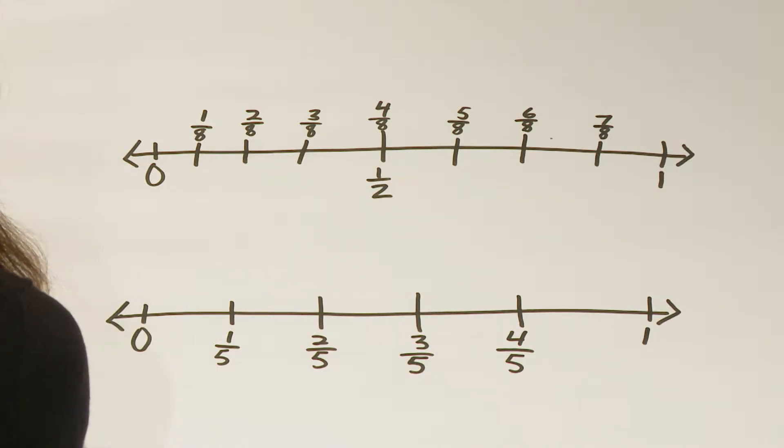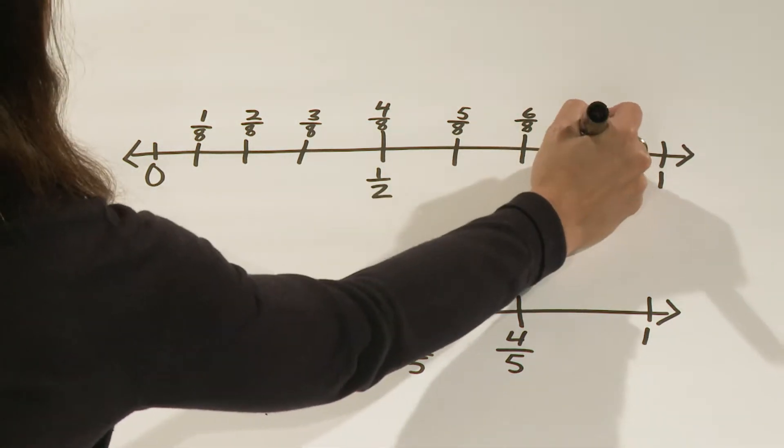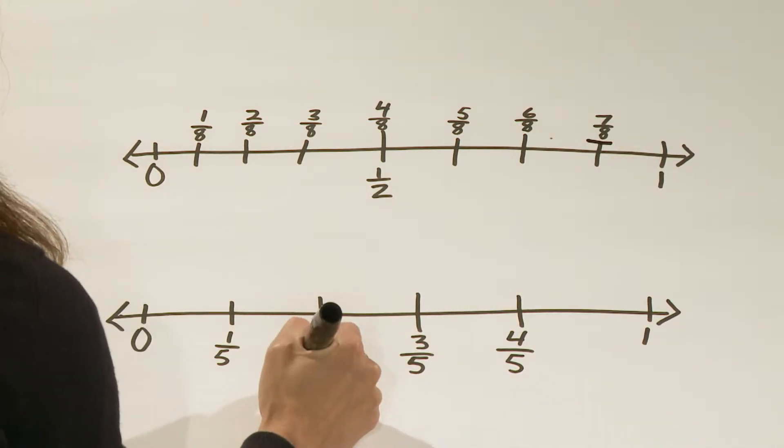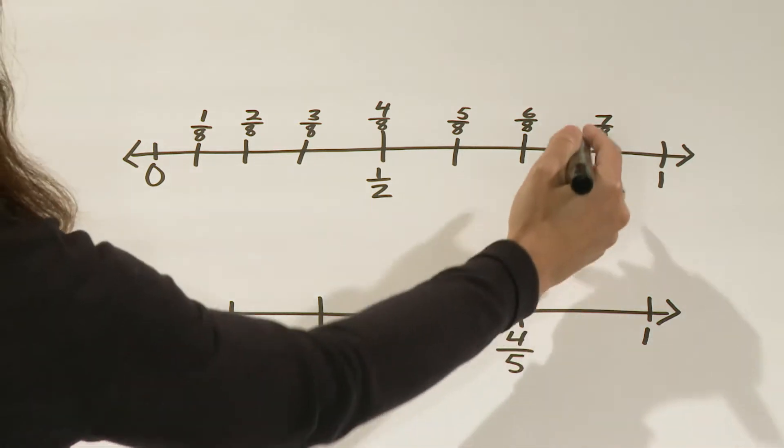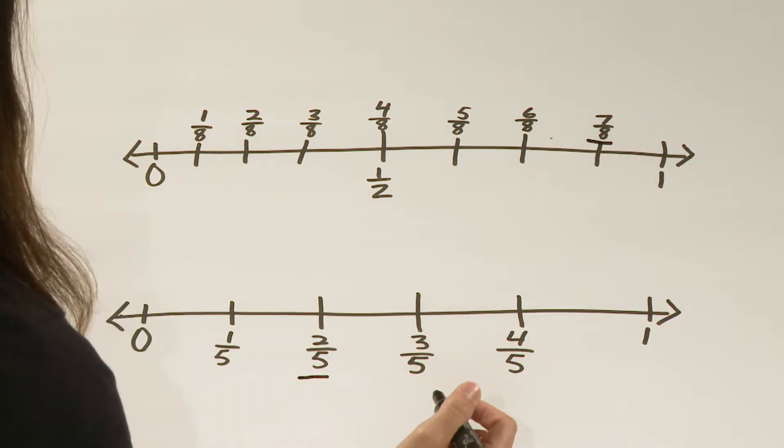Intermediate students could use a number line to compare fractions. For example, if we wanted to know which fraction was larger, 7 eighths or 2 fifths, we could use two number lines partitioned into 8ths and 5ths. Then we could find 7 eighths and we could find 2 fifths. And then we can clearly see that 7 eighths is the larger fraction.